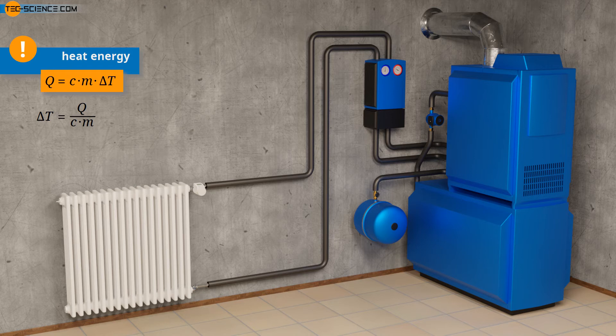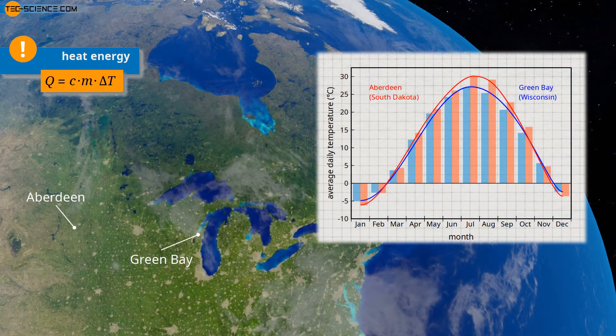When used as a coolant, the water therefore remains cold for a relatively long time despite the heat absorbed, or it remains warm for a relatively long time when used in a heating circuit. The large specific heat capacity of water is also the reason for the less extreme temperature fluctuations in the climate diagram shown at the beginning for Green Bay compared to Aberdeen.